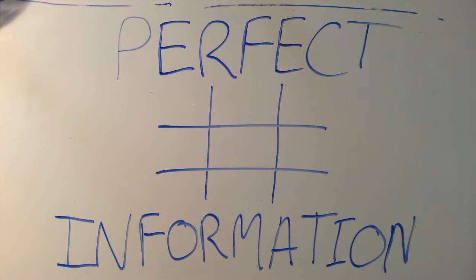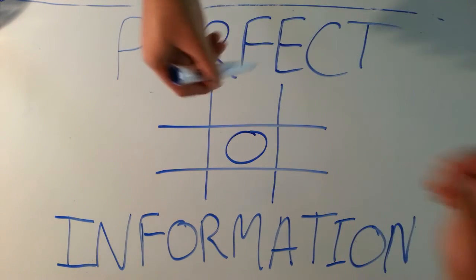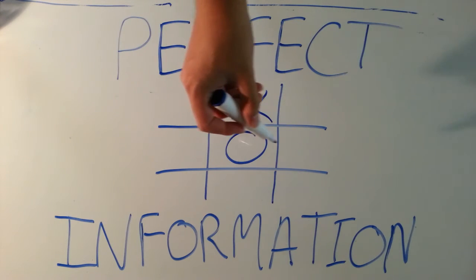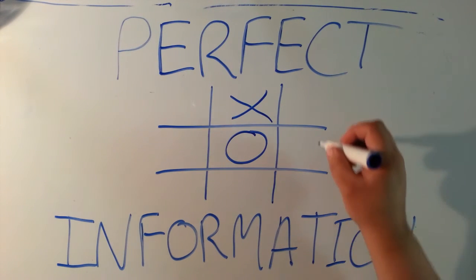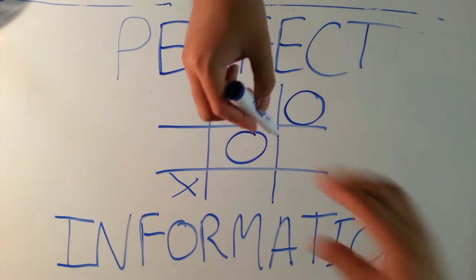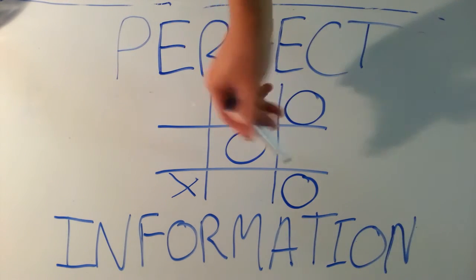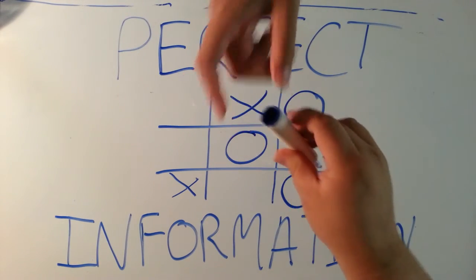Let's start with perfect information and what it is. Perfect information is the idea that both players within this two-player game have exact knowledge of everything that's going on between them and the opponent. The most classic example of perfect information is Tic-Tac-Toe. Both players have all the information that they need to know.